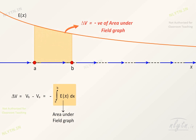Now, if we move a small distance along this line, then the small change in potential is equal to this term. Rearranging this equation, we can say that the field at a point along this line is the negative gradient of potential at that point along that direction.